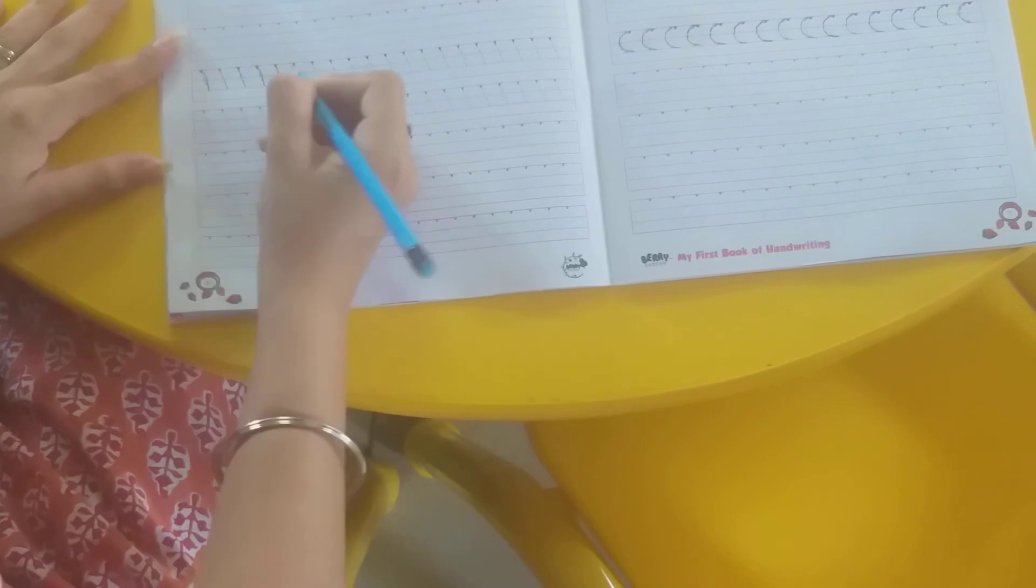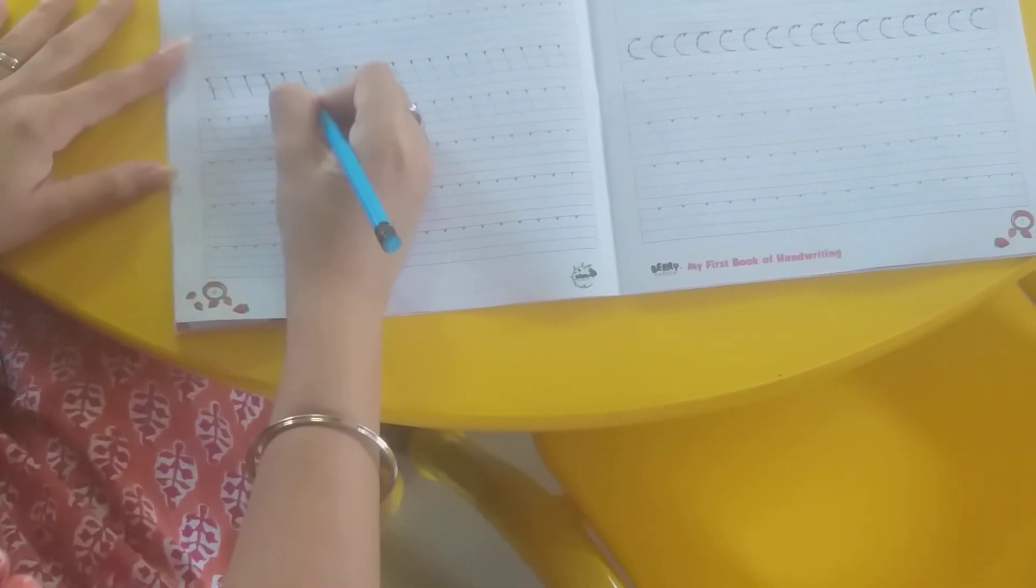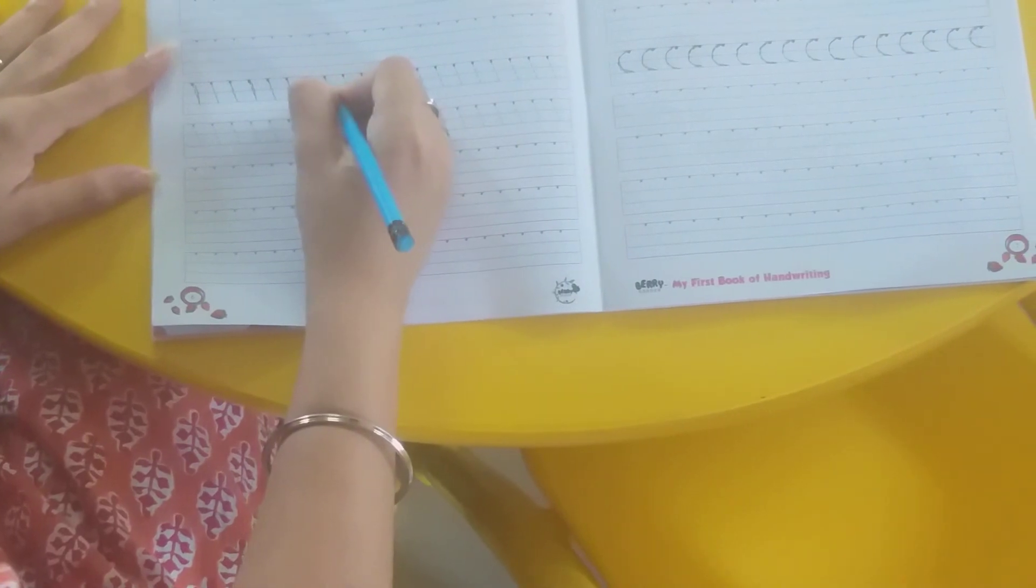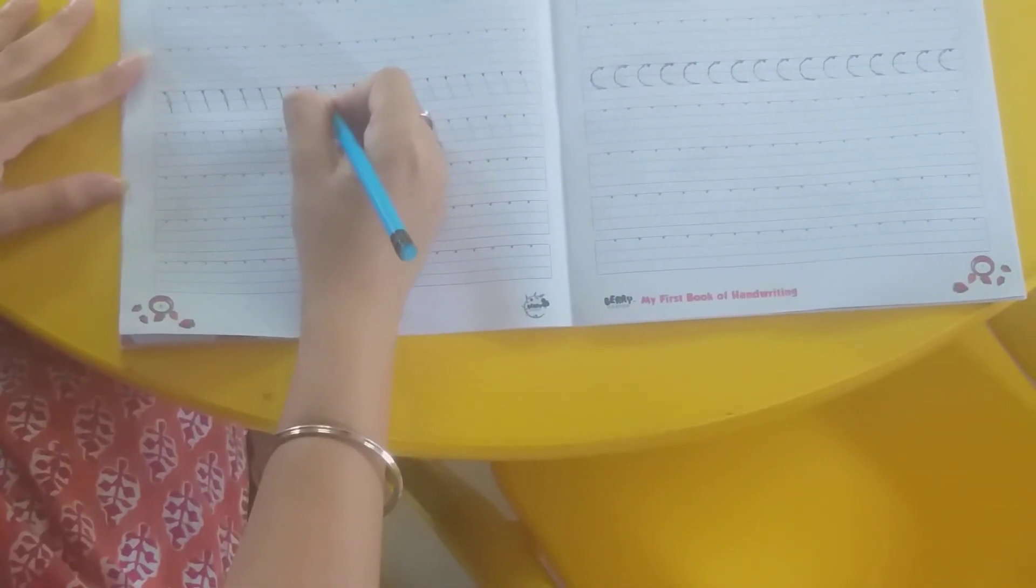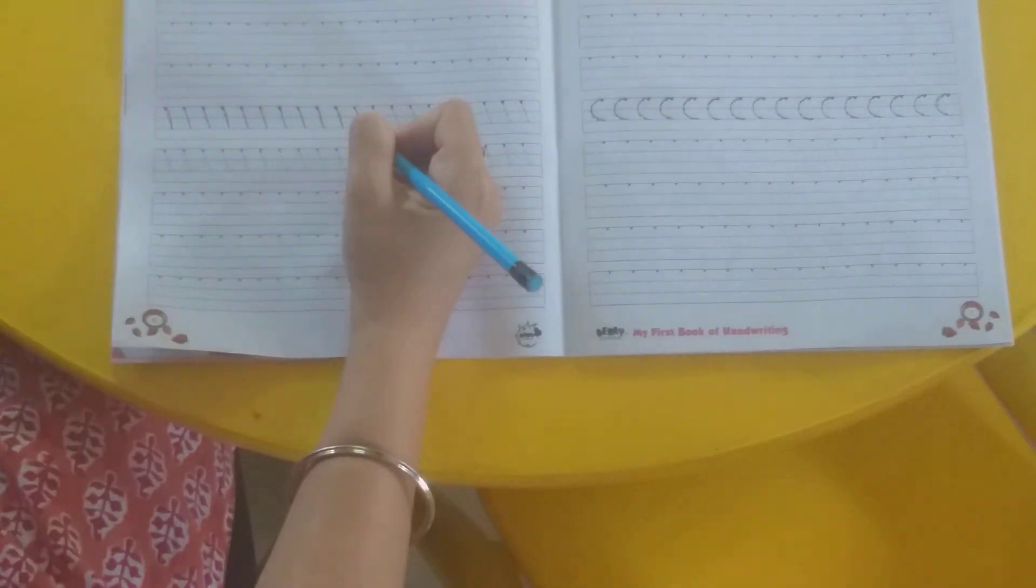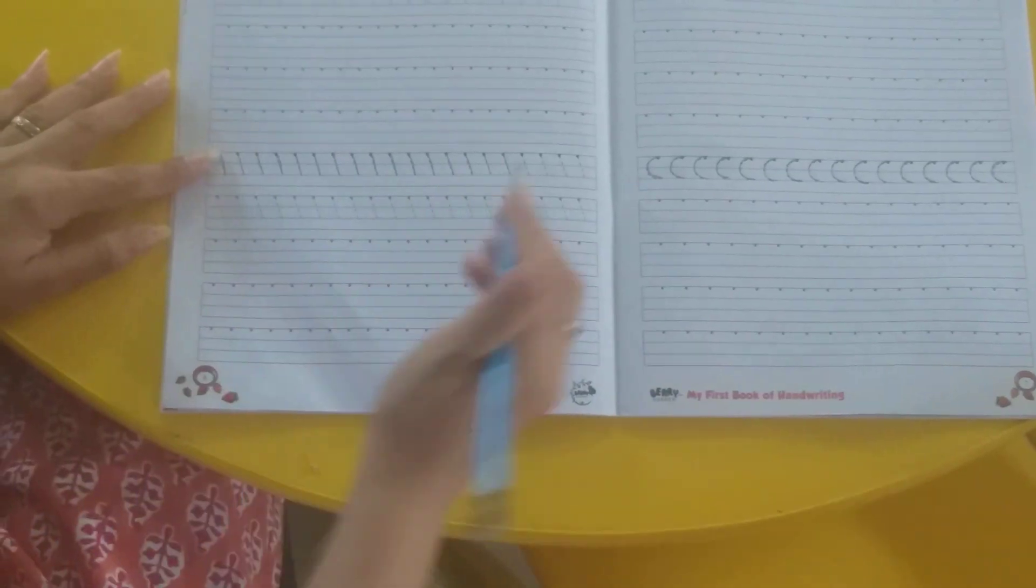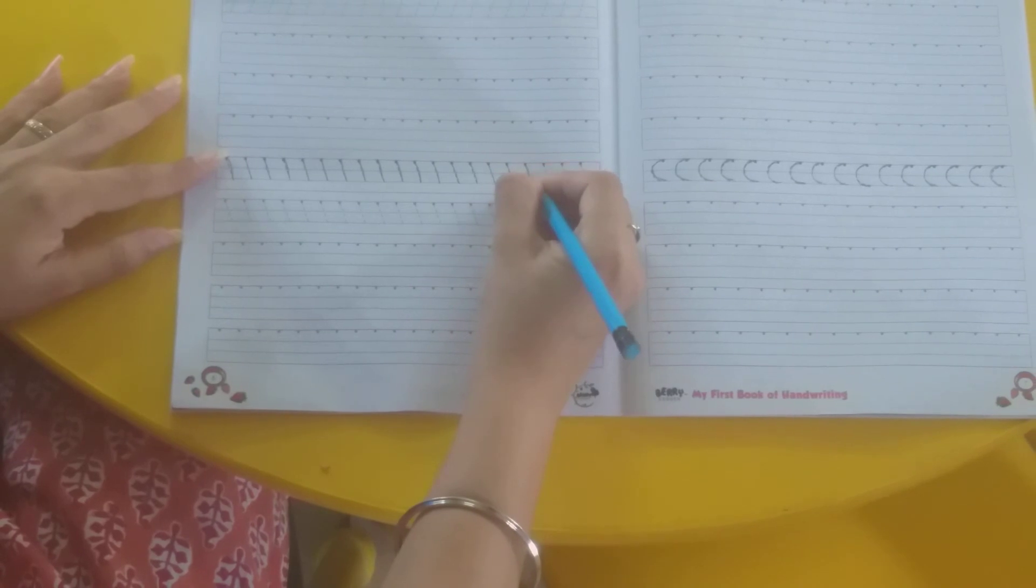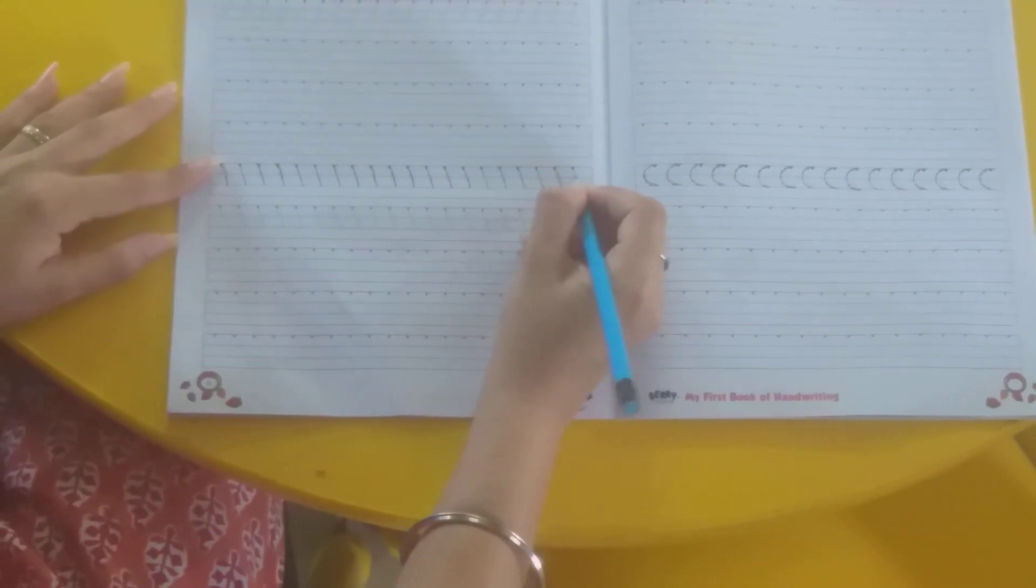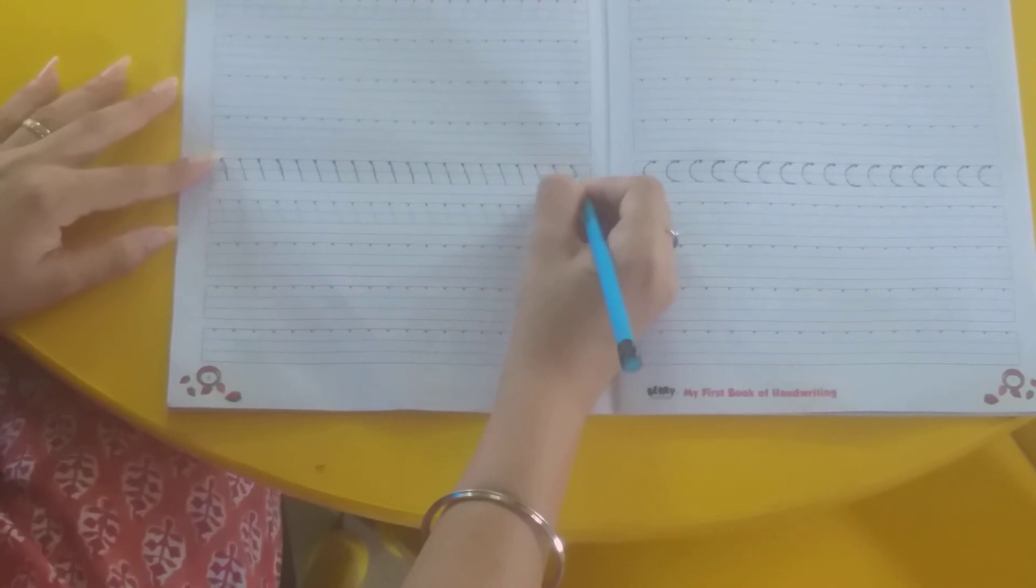Jaisi aap ne right to left ki slowly slowly slowly, vaisi aap left to right bhi slowly kareenge. This is left to right. Right? This is left to right. Samaj me aya bachchao aapko? Right to left and left to right.